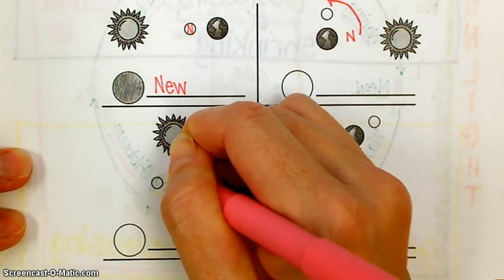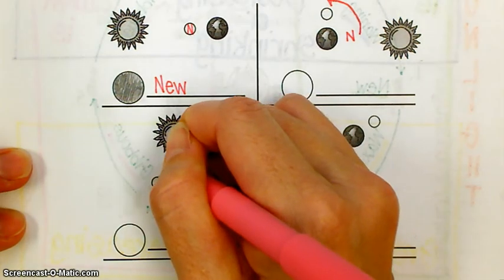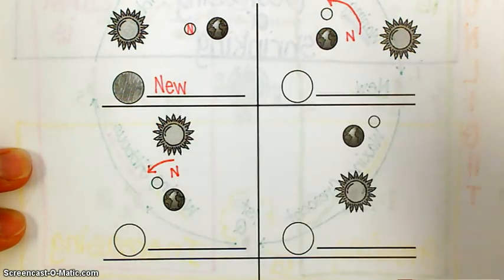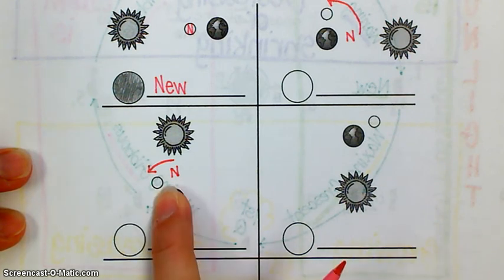So look, I'm going to mark it with an N. And then I'm going to go counterclockwise. I went counterclockwise just like one-eighth of a turn, it looks like. So what is that phase? That's waxing crescent.